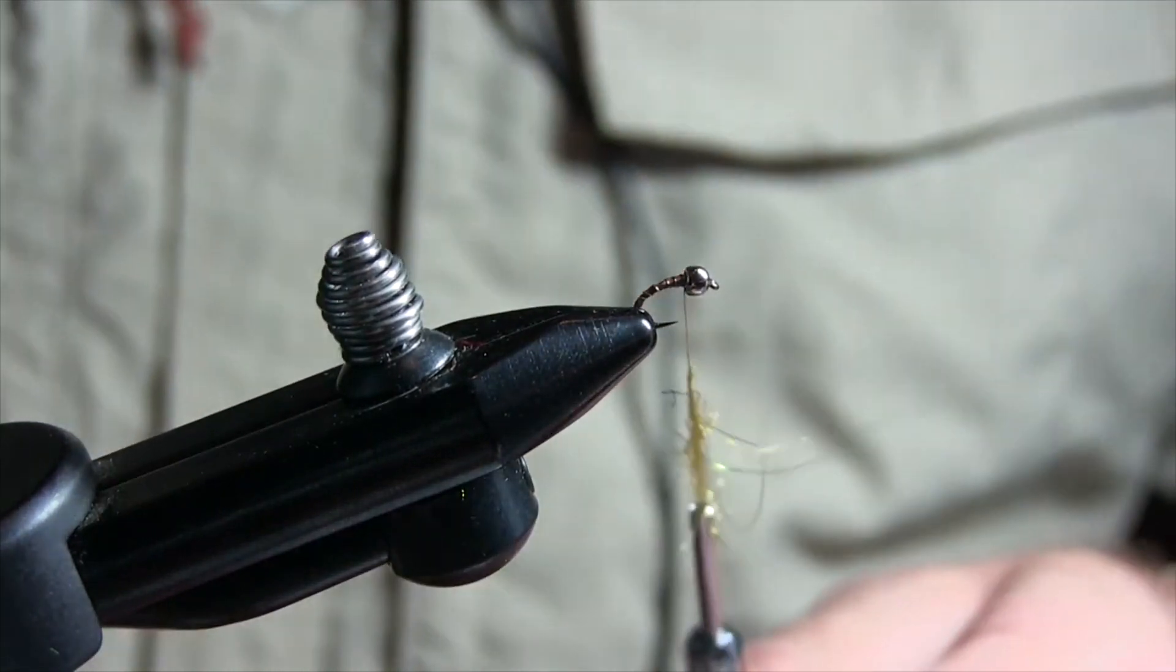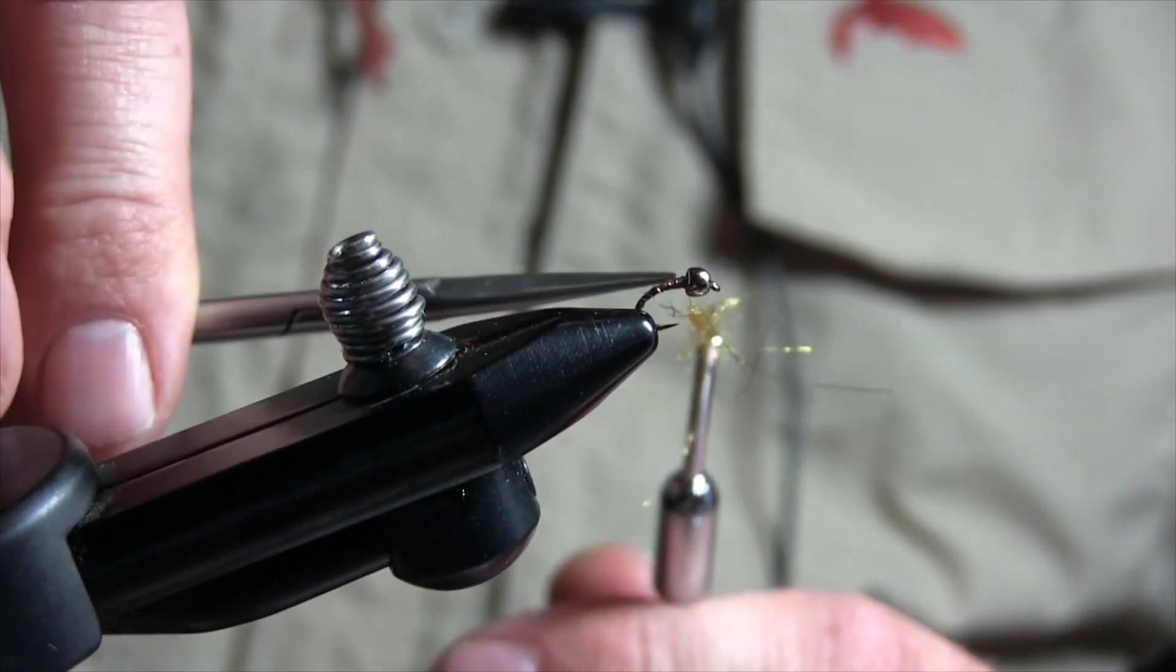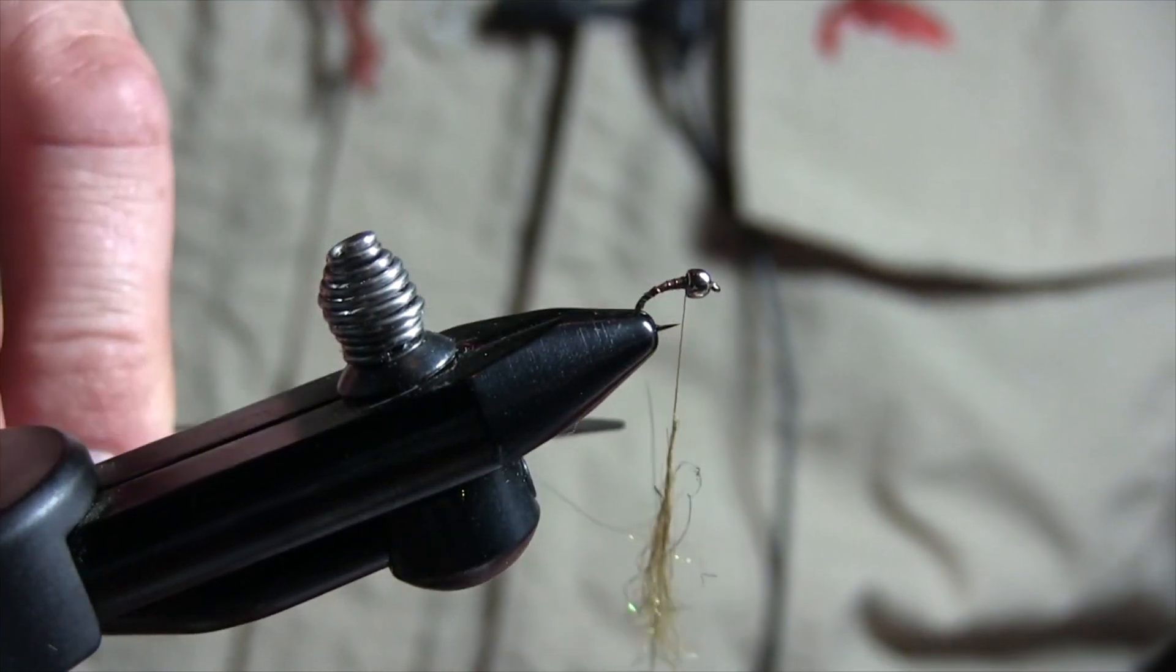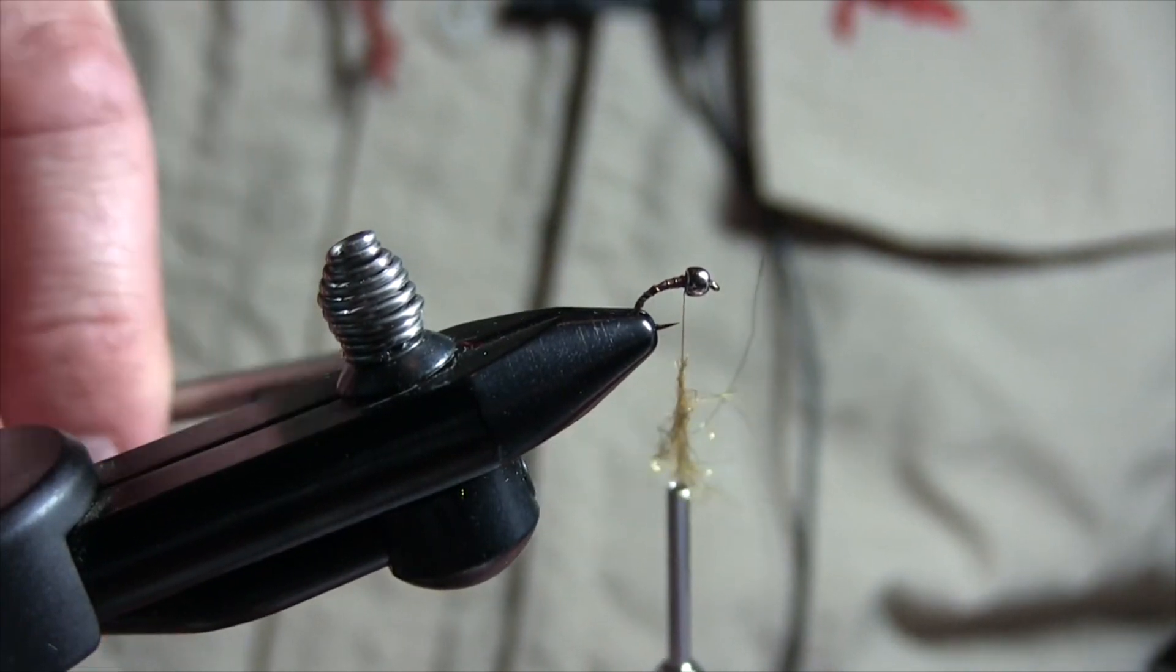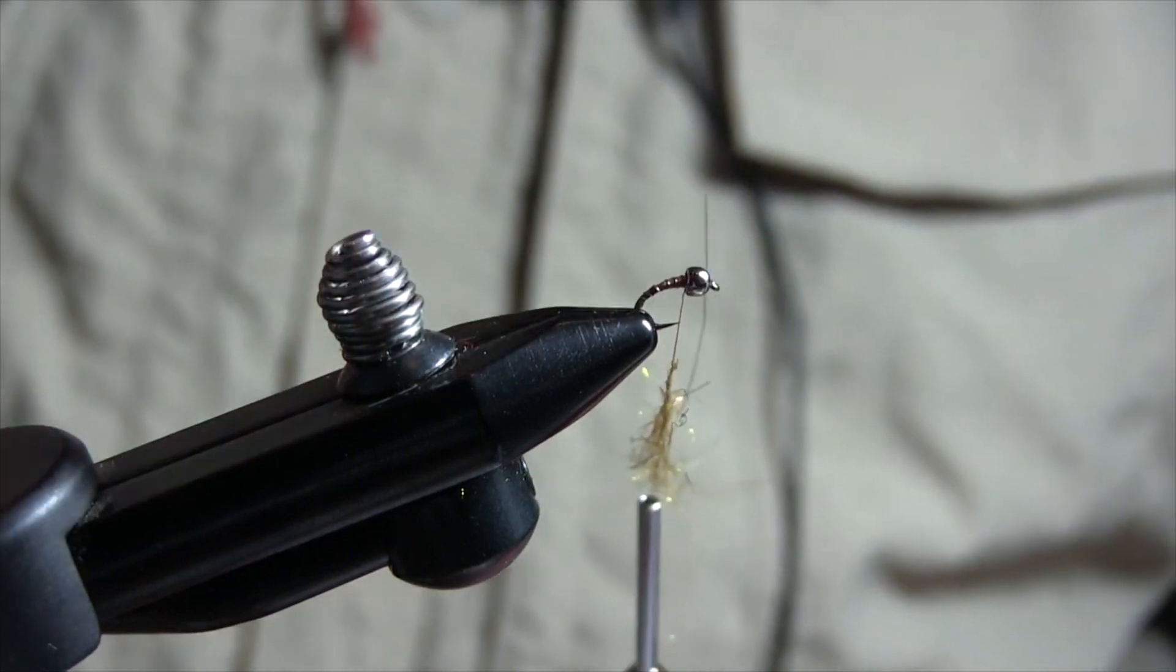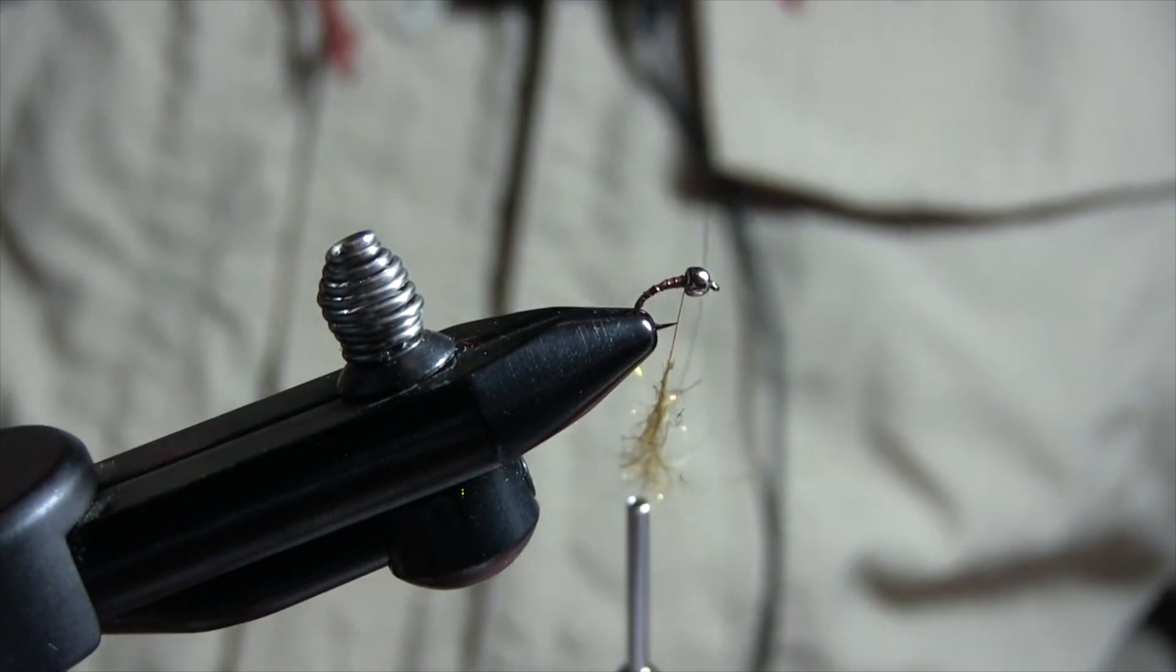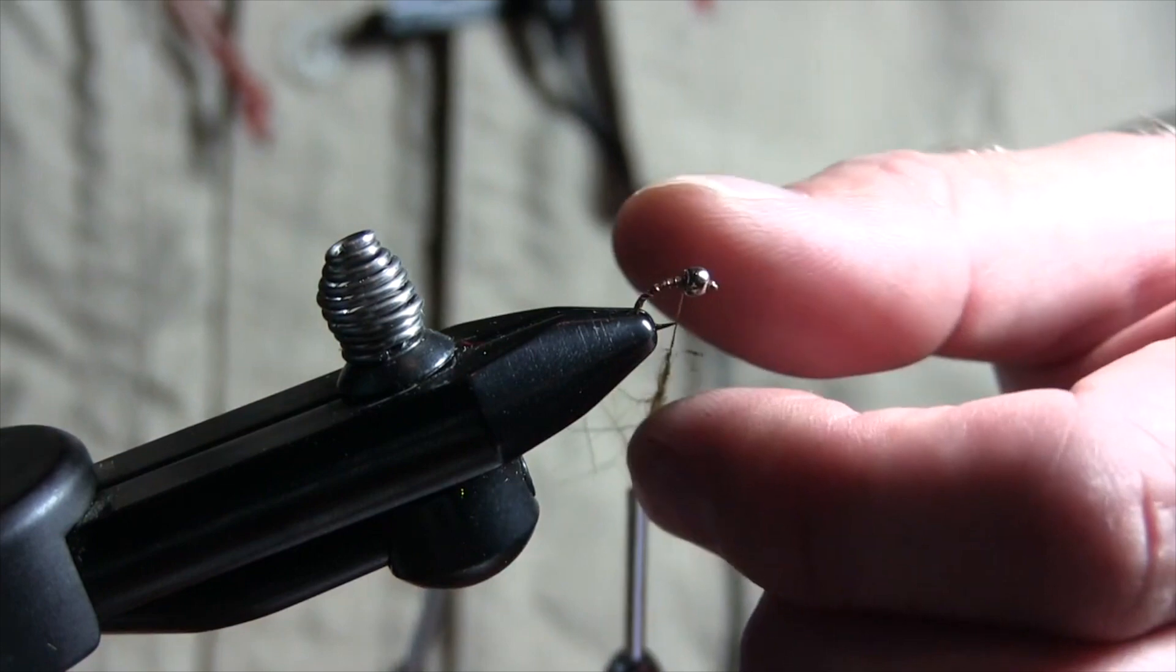You just twist it on there. You really want to get the first part of it here - you really want to get that twisted on there good. As you come back down, as you can see right there, I'm not so concerned about that. I kind of want this to be - I want the head of this fly to be flaring in the water. I don't want it to be real tight, but to get that to happen for you, you definitely want to get your material started really good.